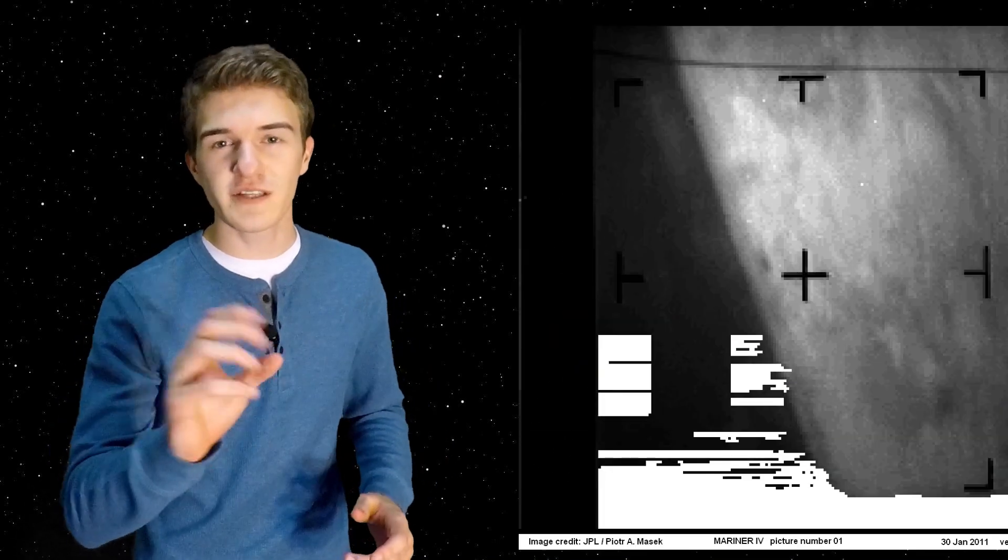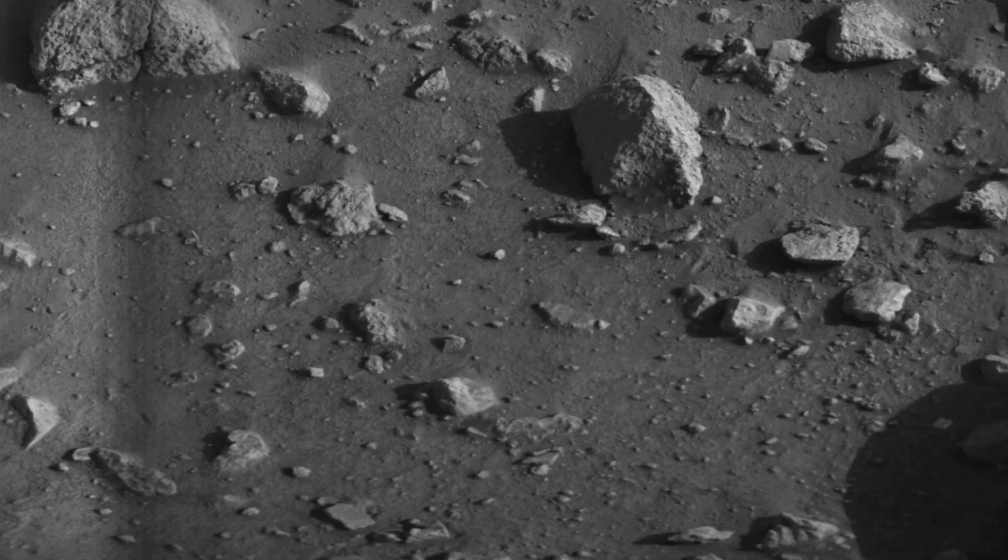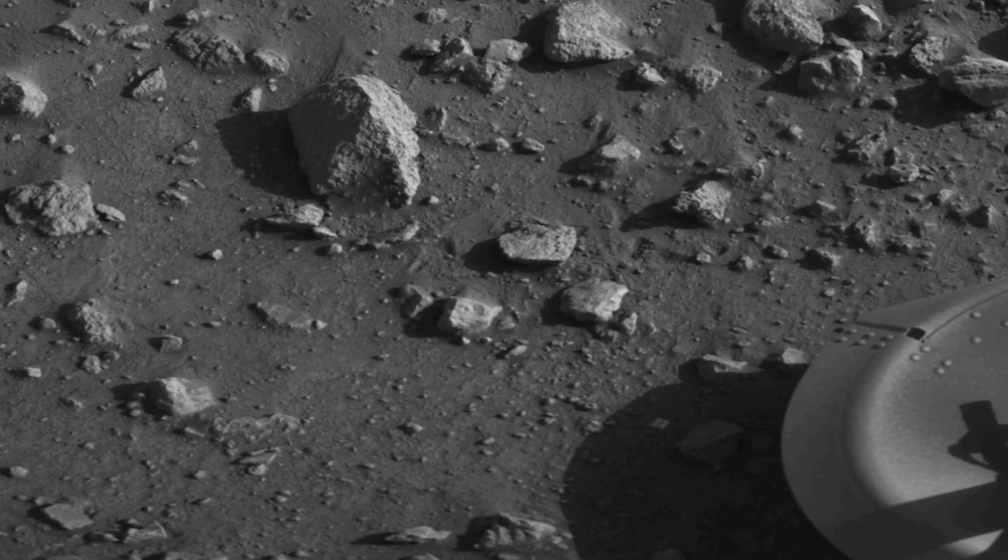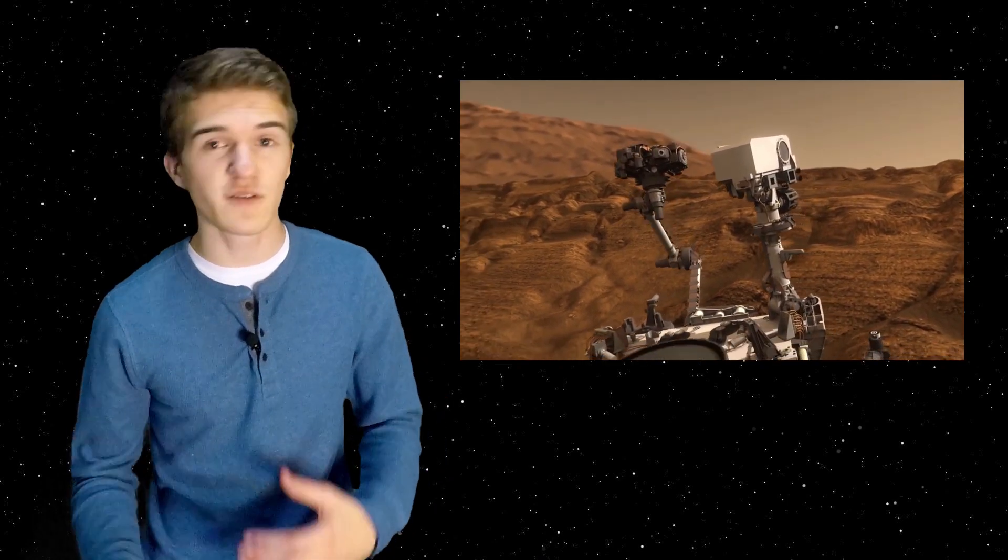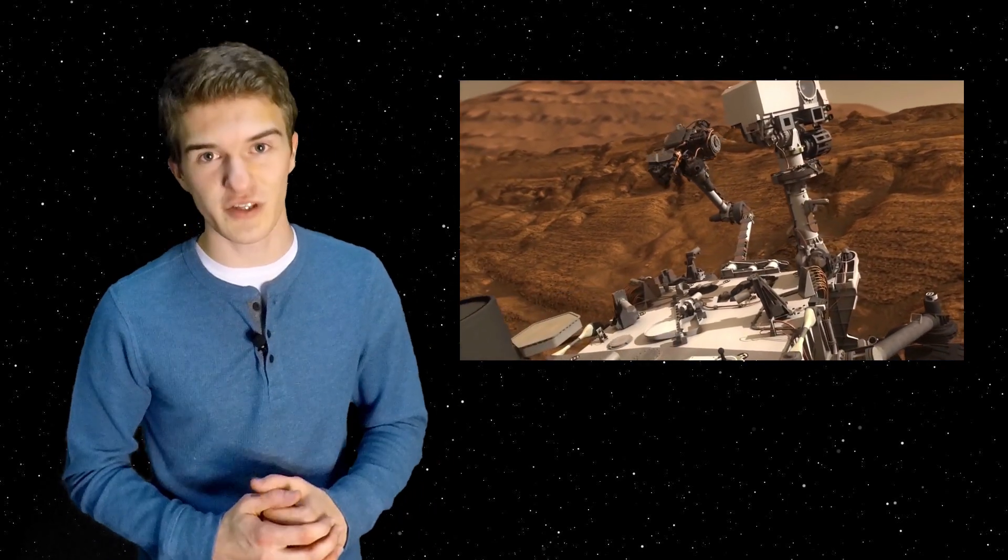NASA has been going to Mars for the last 54 years and have been on the surface of the red planet for the last 42 years. And all combined, they've sent orbiters, landers, and rovers to try and understand different components of the atmosphere, the ionosphere, and take samples on the surface.